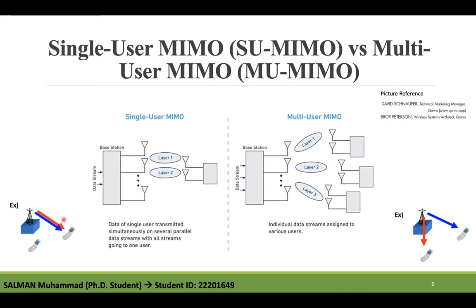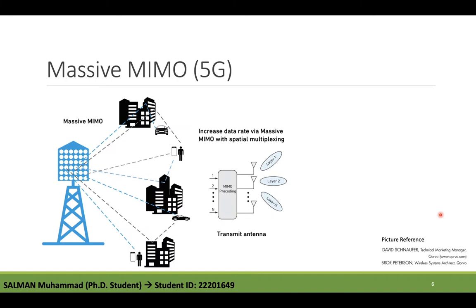In SU-MIMO, all layers are assigned to a single user equipment. In MU-MIMO, different layers are assigned to different UEs. The 5G mantra is to increase network capacity and data rates while minimizing operator expenses. Users increasingly expect wireless services to deliver wireline quality. 5G Massive MIMO helps operators achieve these goals — delivering high data rates to many users, increasing capacity, and supporting real-time multimedia services.